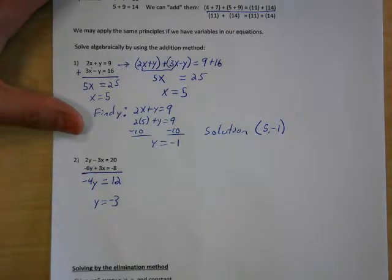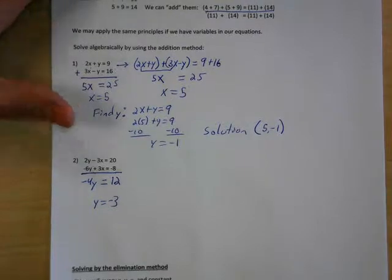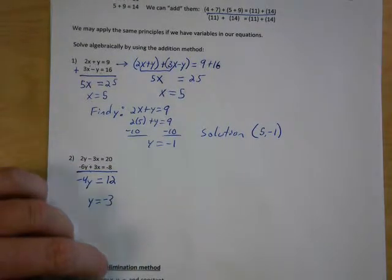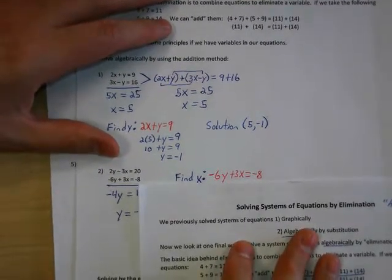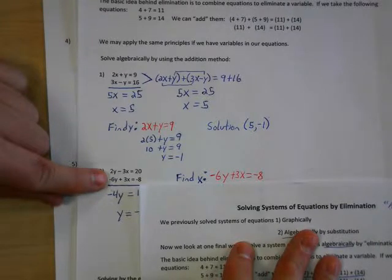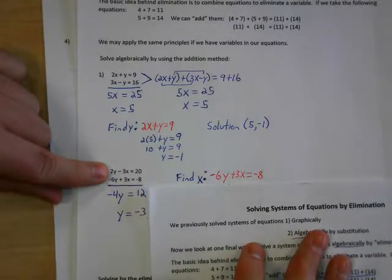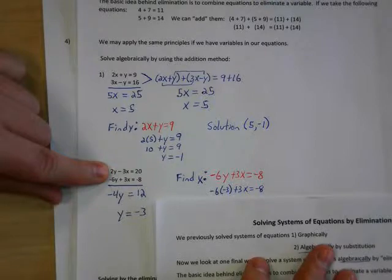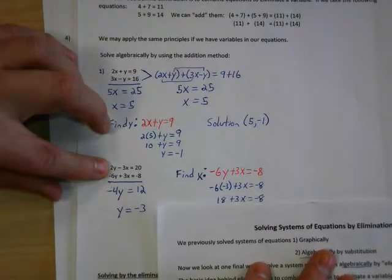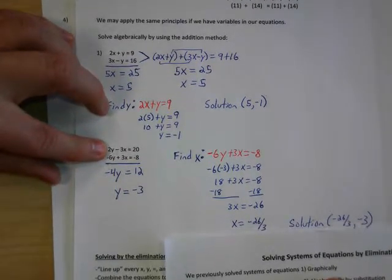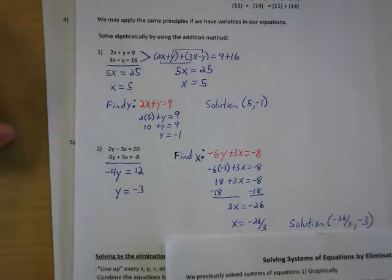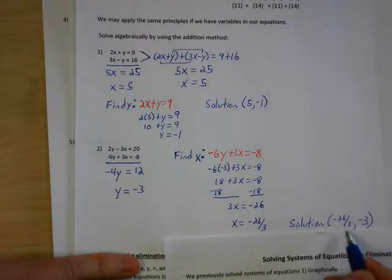Now that we have y equals negative 3, we need to find x. We take one of our equations — I used the bottom equation, negative 6y plus 3x — and plug in negative 3 for y. Solve that for x and you end up with negative 26 thirds. So the solution is x equals negative 26 thirds, y equals negative 3.